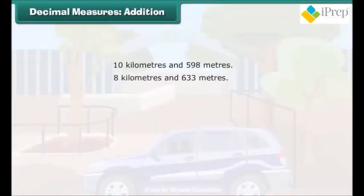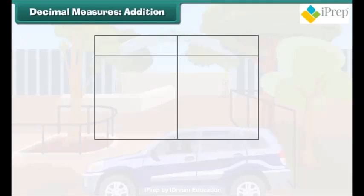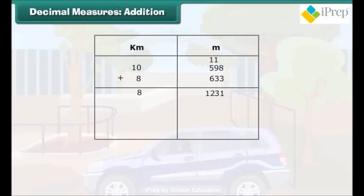The total distance covered by Ryan and his uncle can be calculated by adding both the distances. First, make two columns. In first column, write kilometers, that is km, and in second column, write m, that is meter. Write 10 under kilometers and 598 under meters. Below 10, write 8, and below 598, write 633. Now add it. The sum of 598 meters and 633 meters is 1231 meters, which is equal to 1 kilometer and 231 meters. Thus, 1 kilometer is added to 18 kilometers. In total, they have covered a distance of 19 kilometers and 231 meters.